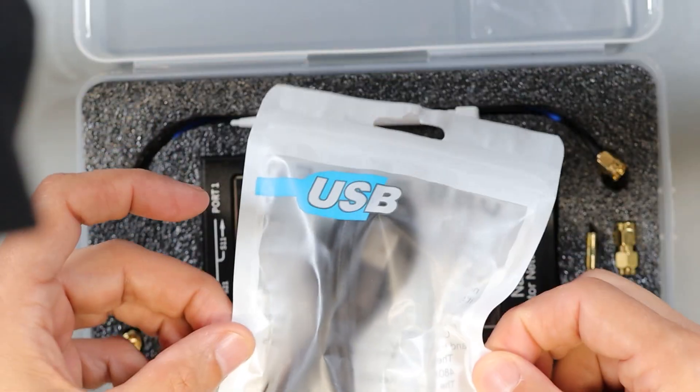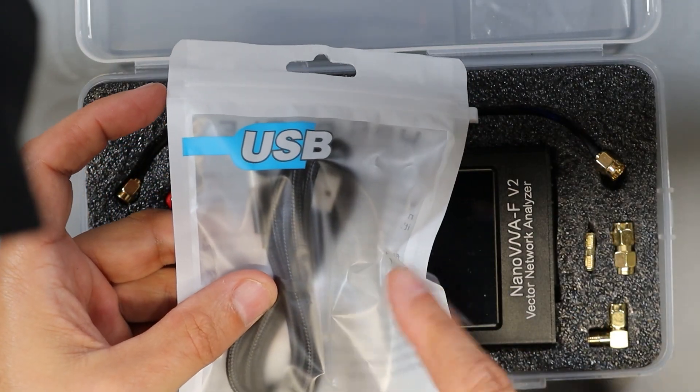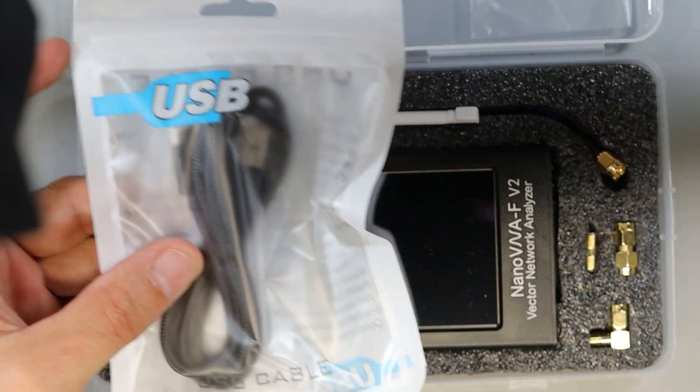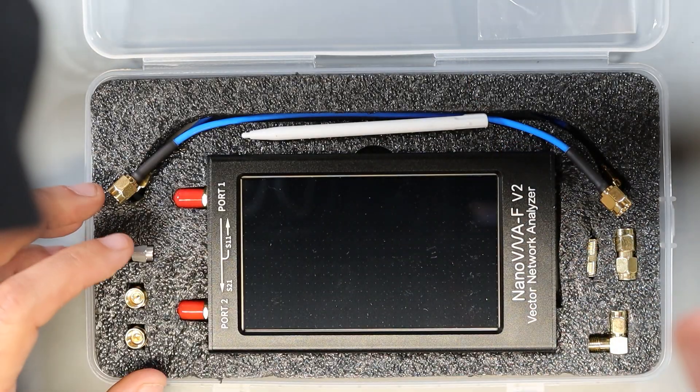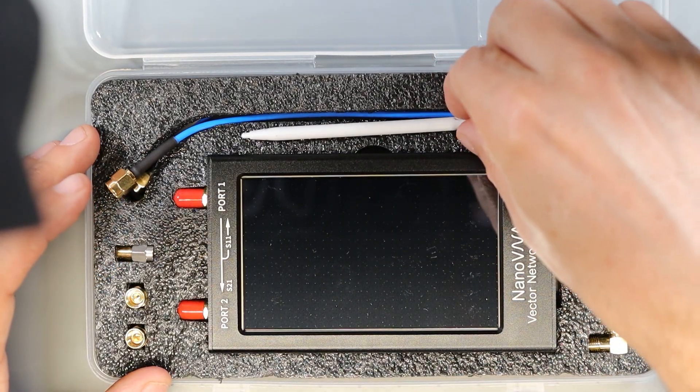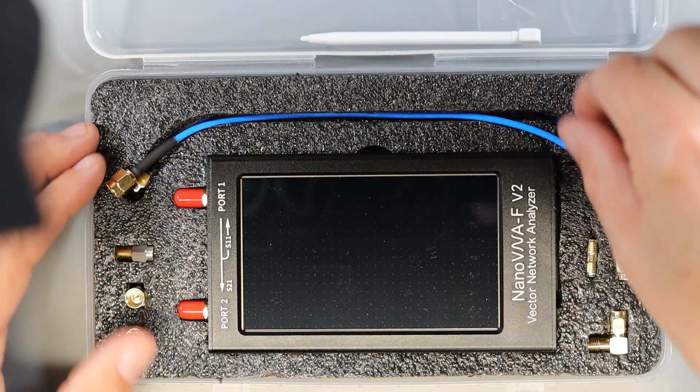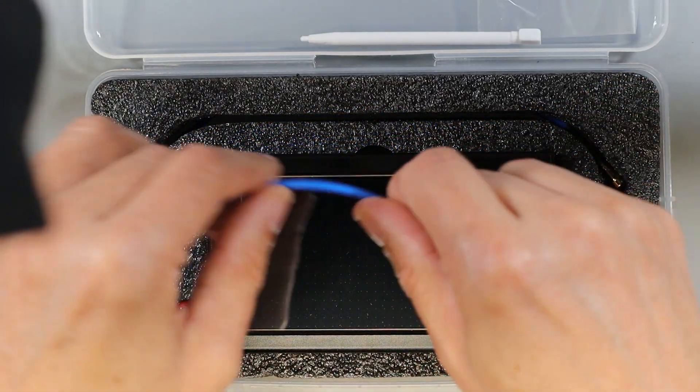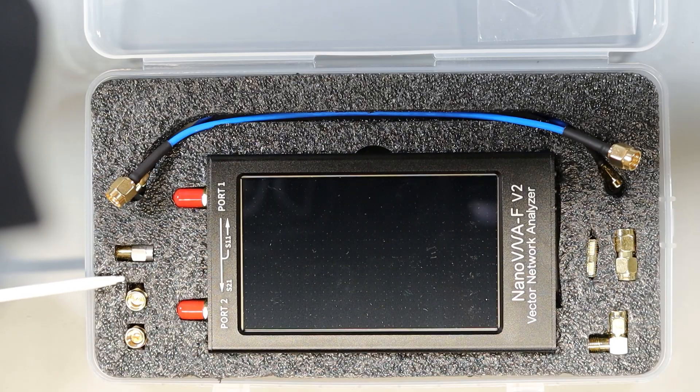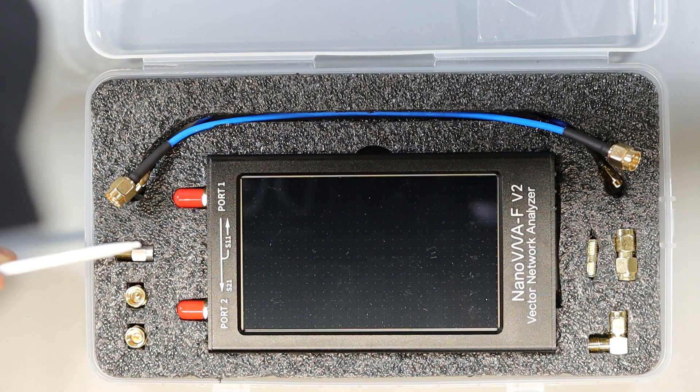Of course you also get a USB cable so you can connect this up to your computer or use this to charge it. This NanoVNA comes in a carrying case with all of its accessories and those accessories include a stylus. We get two patch cables and these are semi-rigid patch cables. Over here we have our calibration slugs: the open, the short, and the 50 ohm load.